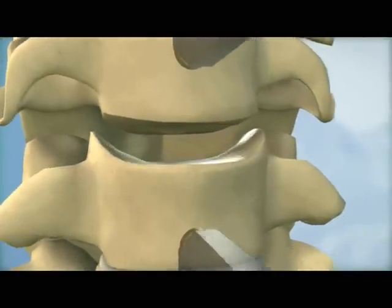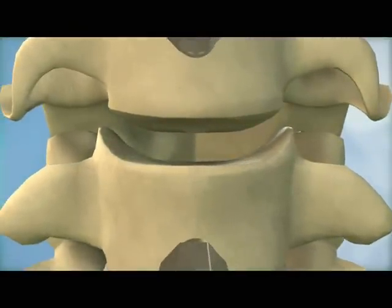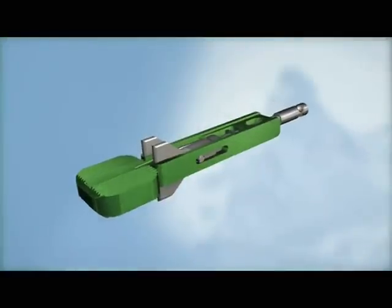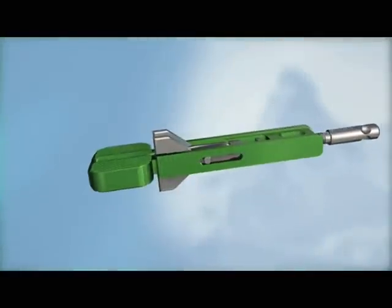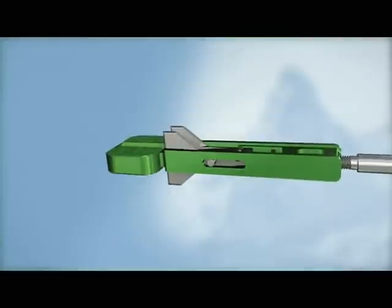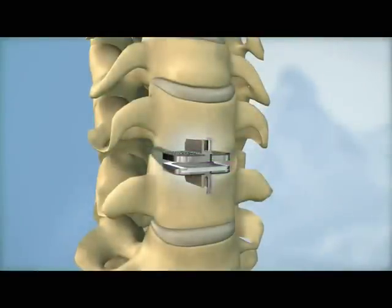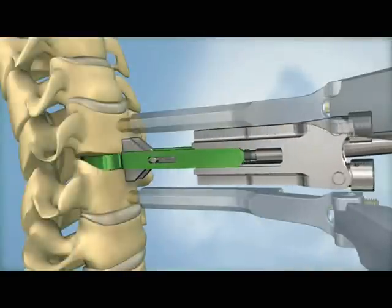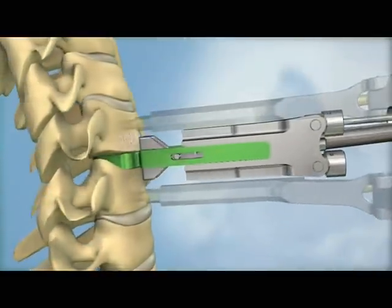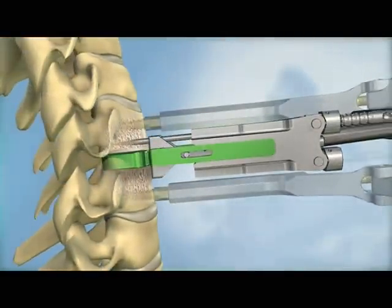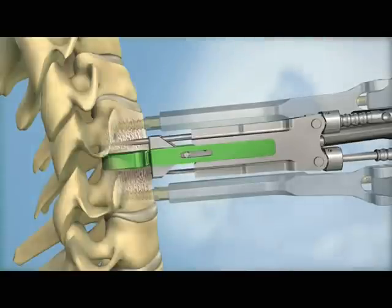Once the disc space is cleared and the segment is remobilized, a trial is used to assess the implant size and position within the disc space. Next, keel channels are prepared in the vertebral bodies above and below the disc space. The keel channels for the ProDisc-C implant can be prepared using either a milling technique or a chiseling technique.